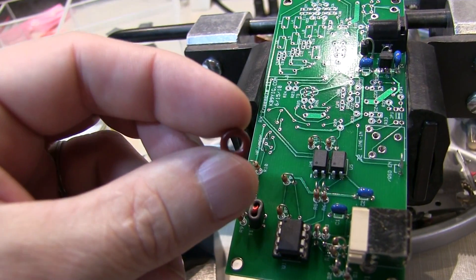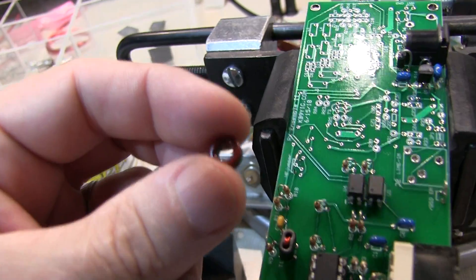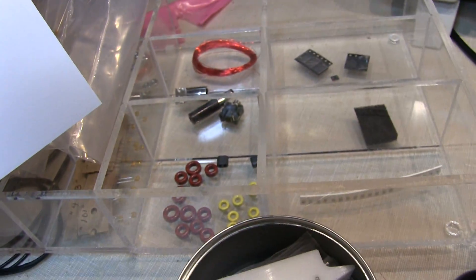The toroid cores themselves are color-coded. These red ones are a type 2, yellow is often a type 6, like those over there.